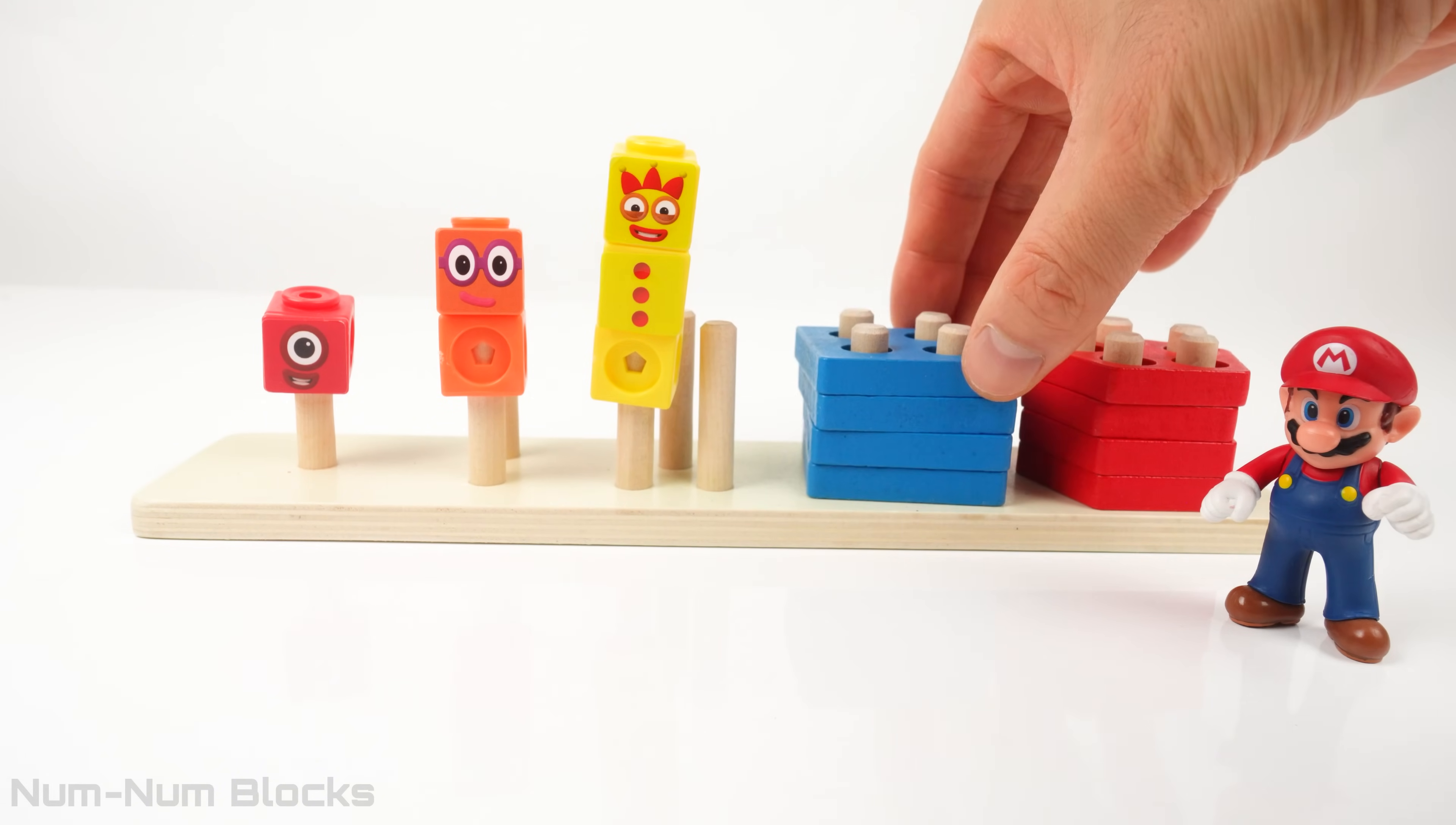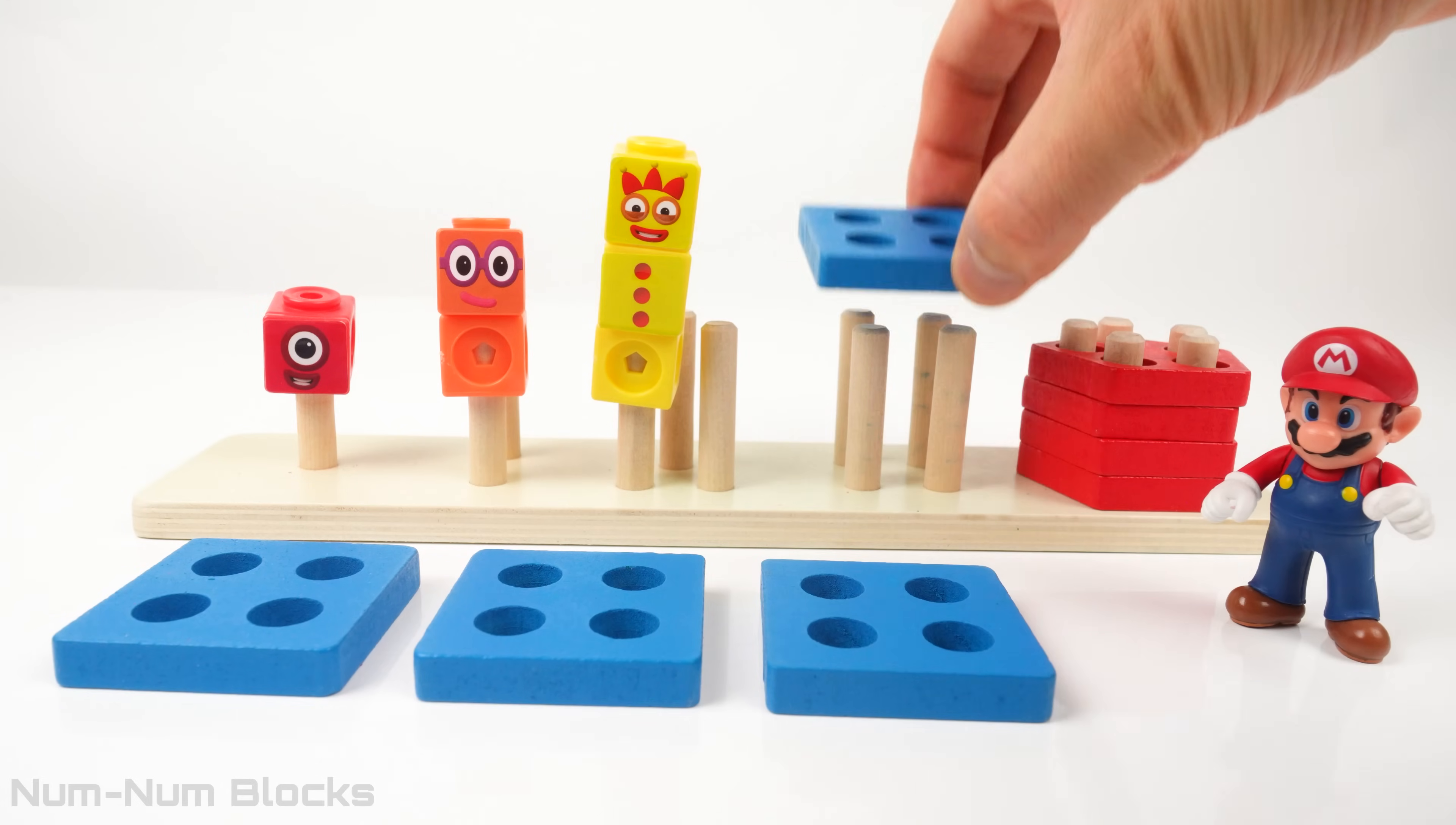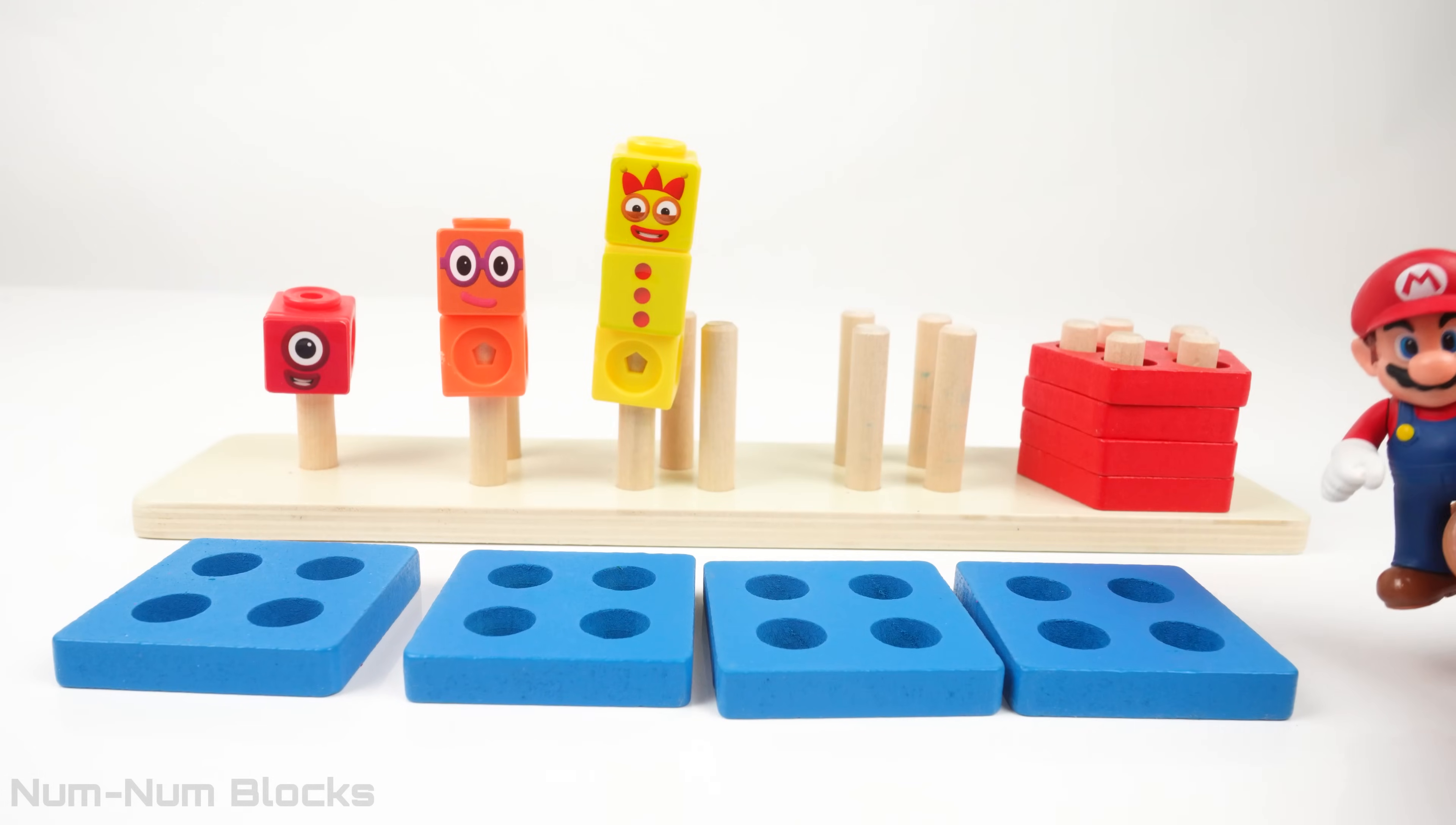Let's count the blue squares. One. Two. Three. Four. Do we need to remove any squares to get number four? No, we don't. We have the right number of pieces.